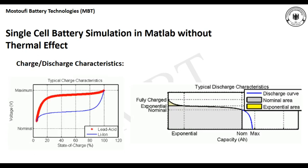The charge and discharge characteristics of the battery model in the sources sub-library are shown in these figures. The typical charge characteristics of a lithium-ion battery and a lead-acid battery are presented. The lead-acid battery needs a higher voltage for charging compared to the lithium-ion battery. The discharge characteristics are represented with three sections: an exponential section, a nominal area where voltage is almost constant, and a final section where voltage drops to a minimum value.